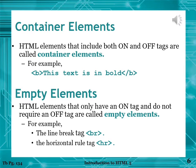In contrast with container elements, we have empty elements, which have no off tag. HTML elements that only have one tag and do not require an off tag are called empty elements. For example, the line break tag — we write br in angle brackets — and the horizontal rule tag — we write hr in angle brackets.